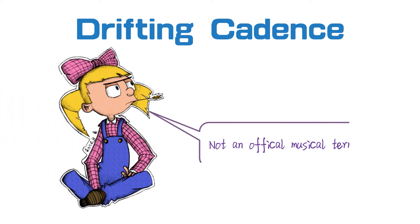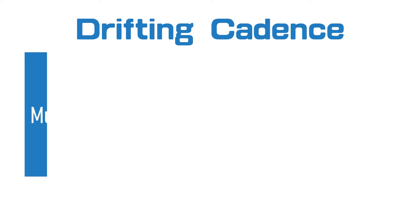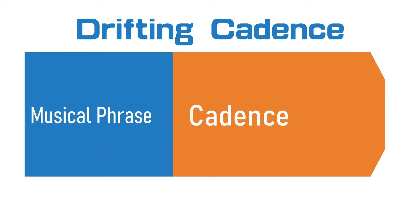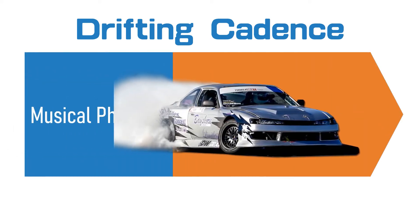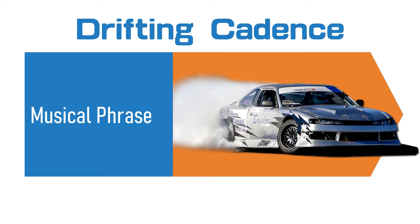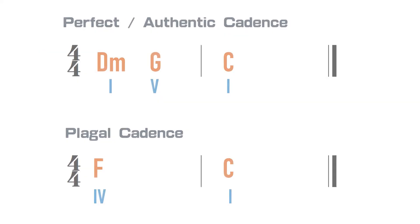Now, let's get back to the drifting cadence. Actually, this is not an official musical term — I just made up this term myself. Because the cadence will unexpectedly shift the tonal center, this creates a drifting effect at the end of the cadence.